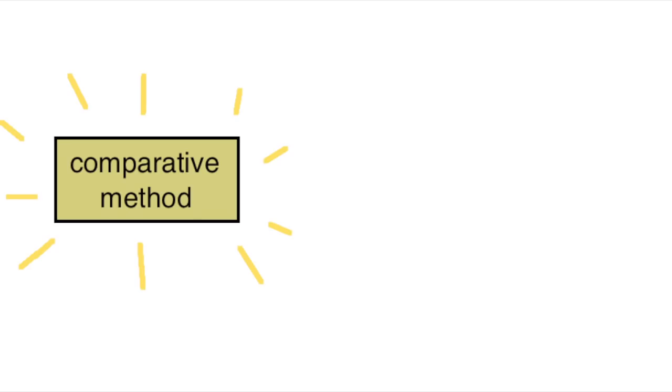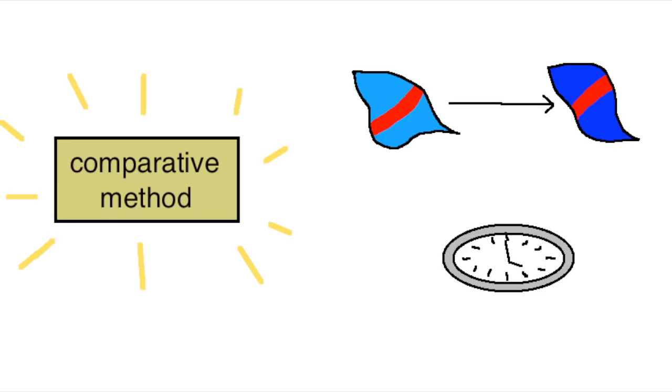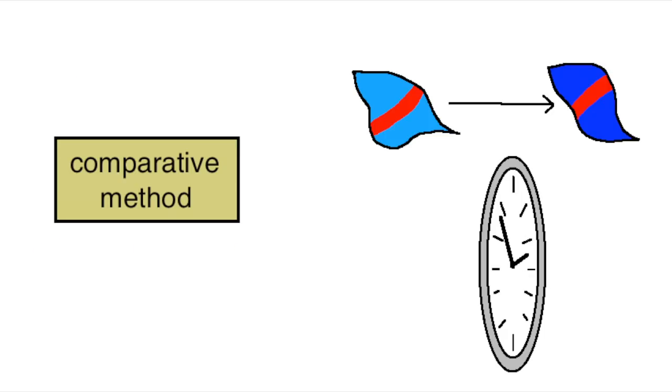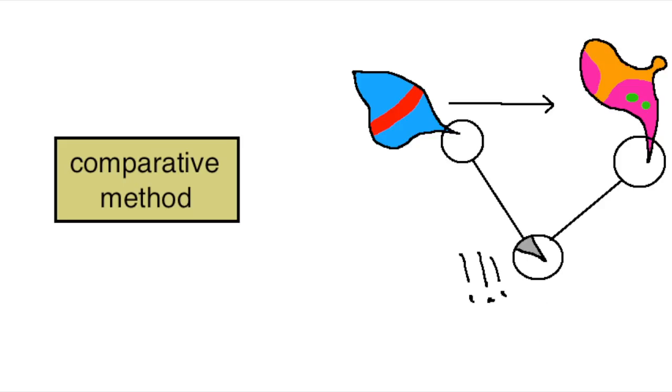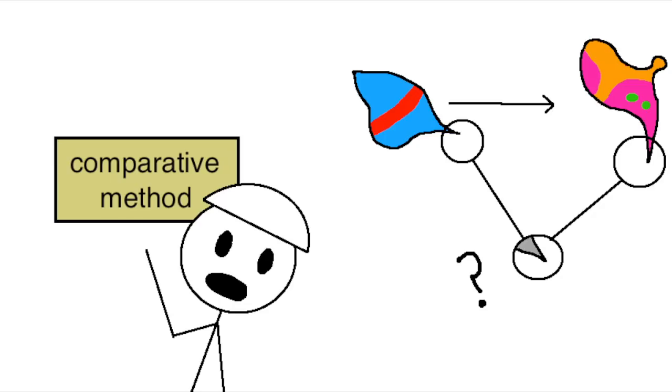Thing is, though, this method works best at short timescales, when the changes languages have gone through are the simplest and the easiest to figure out. At longer and longer timescales, the changes start to pile up and get more and more complicated, and it gets harder and harder to tell if these are actually regular correspondences or if it's just random coincidence. Not only that, but any time the meaning of words change in addition to how they're pronounced, that's also another piece of evidence lost.